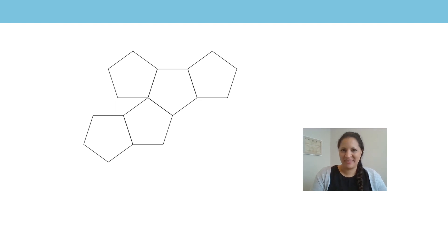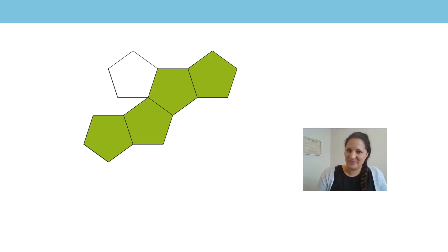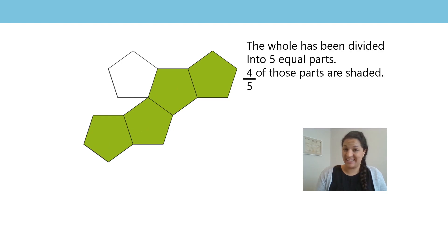Let's do this question together. We've seen this image before, haven't we? What do you notice? Well, the whole has been divided into five equal parts so our unit fraction is one-fifth. What can you see now? Well, four parts are shaded. Shall we count them using our unit fractions to help? One one-fifth, two one-fifths, three one-fifths, four one-fifths. Now shall we use our stem sentence to say it together? The whole has been divided into five equal parts. Four fifths of those parts are shaded.